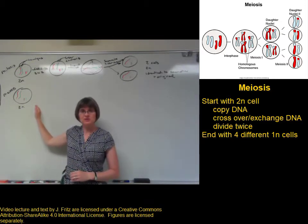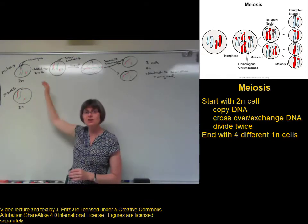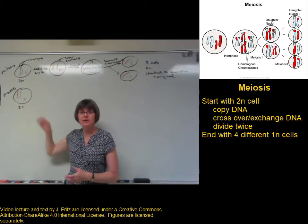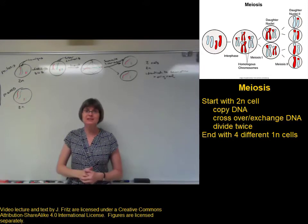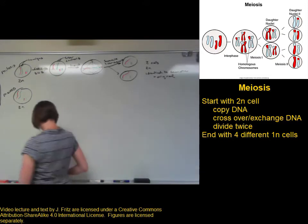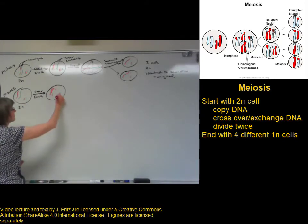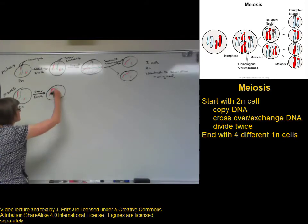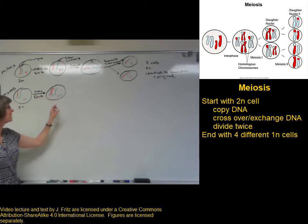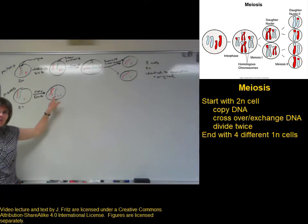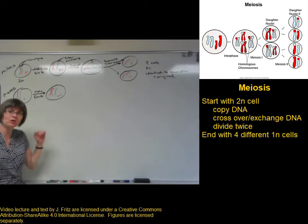With the process of meiosis, we're going to start with the same 2N diploid cell that we saw at the beginning of mitosis. The process of meiosis begins the same way — first, we need to copy the DNA. We make an exact copy of each chromosome: two exact copies of the long red, two exact copies of the long green, two exact copies of the short red, and two exact copies of the short green.